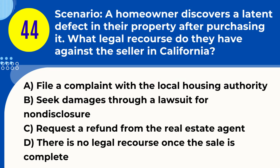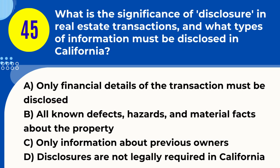Question 44. Scenario: A homeowner discovers a latent defect in their property after purchasing it. What legal recourse do they have against the seller in California? A. File a complaint with the local housing authority. B. Seek damages through a lawsuit for non-disclosure. C. Request a refund from the real estate agent. D. There is no legal recourse once the sale is complete. Answer: B. Explanation. In California, if a homeowner discovers a latent defect after purchase that the seller knew about and did not disclose, they can seek legal recourse against the seller. The law requires sellers to disclose known material defects, and failure to do so can lead to a lawsuit for non-disclosure.